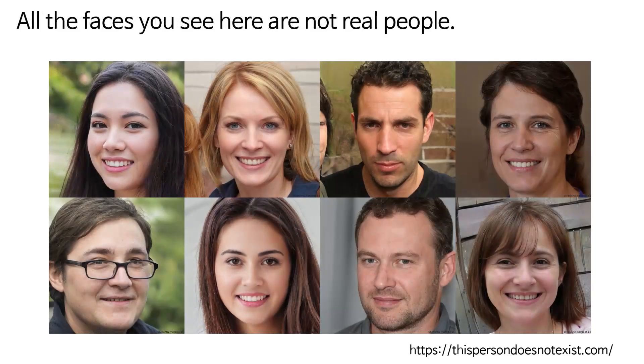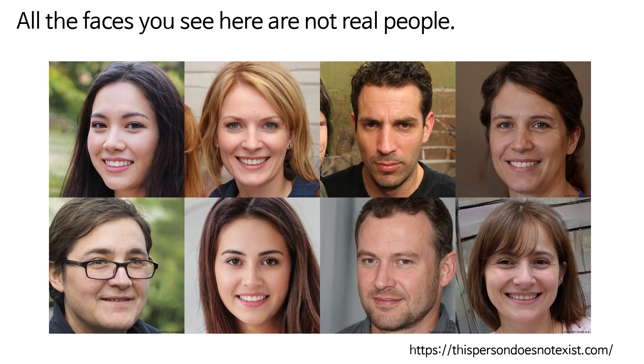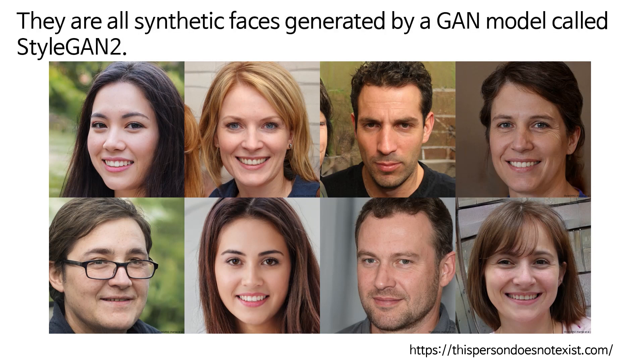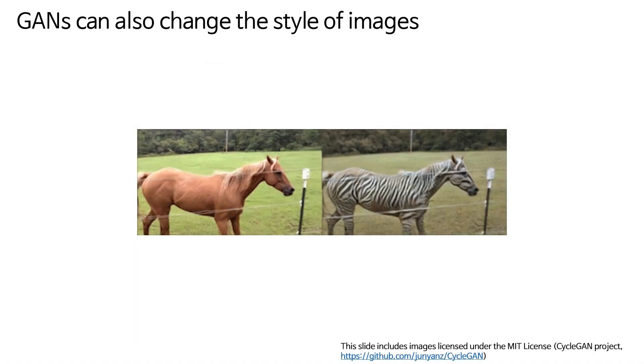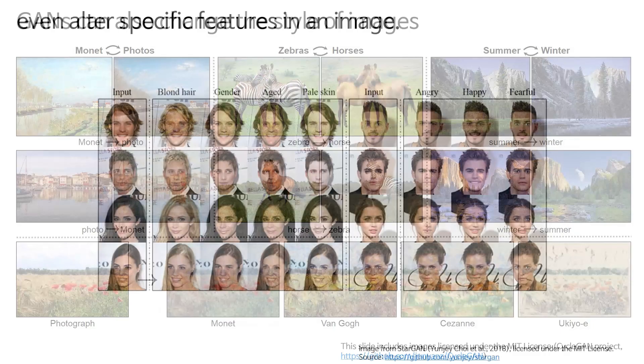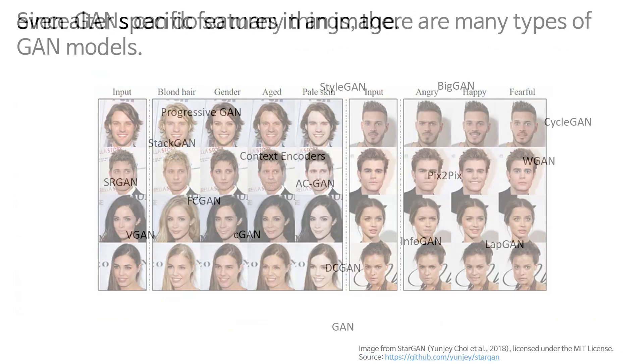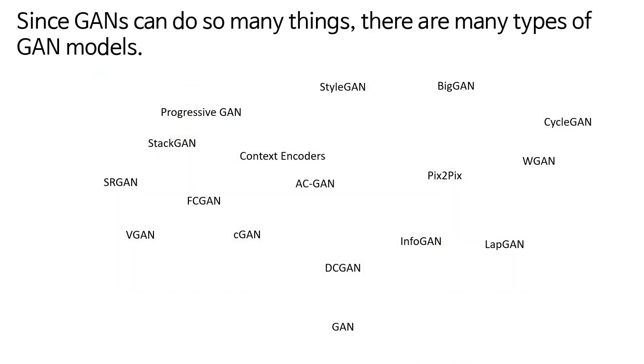Before we dive into what a GAN is, let's briefly look at what GANs can do. All the faces you see here are not real people. They are all synthetic faces generated by a GAN model called StyleGAN2. GANs can also change the style of images, even alter specific features in an image. Since GANs can do so many things, there are many types of GAN models.